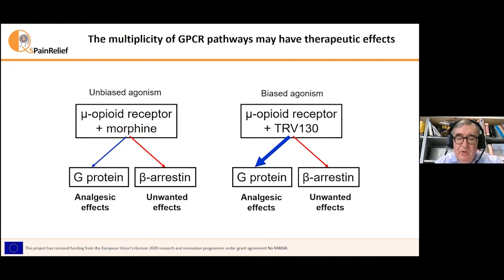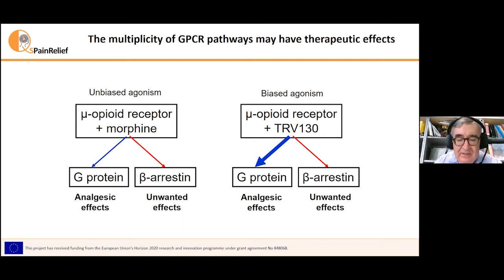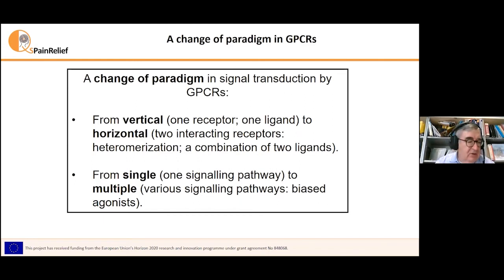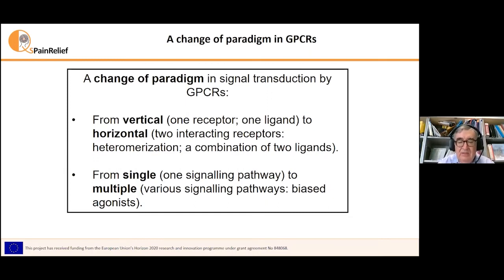There is a lot of controversy about this in recent years — a problematic situation with authors going to one side or the other. Nevertheless, there has been a big effort in finding ligands biased towards the G-protein pathway, the one supposed to be responsible for the therapeutic effects. For instance, we can see here the new compound TRV130, that was recently approved by the FDA. All this complexity leads to a change of paradigm in GPCR signal transduction: from vertical — one receptor, one ligand — to horizontal — two interacting receptors through, for instance, receptor heterodimerization and combination of two drugs — and from single, one signaling pathway, to multiple signaling pathways and biased agonism.